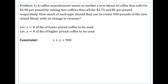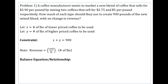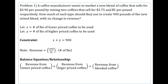That's one constraint on the amount to be used. The other constraint deals with revenue — we have to balance the revenue. Remember that revenue is the cost per pound times the number of pounds, i.e., price per unit times number of units sold. Our balance relationship is: revenue from lower-priced coffee plus revenue from higher-priced coffee must equal the revenue generated from the blend.